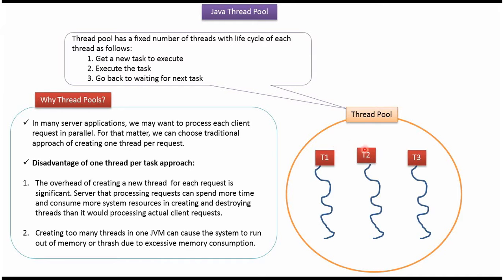ThreadPool has fixed number of threads. Each thread will get a new task to execute and it will execute the task. Once task execution is over, the thread will be returned to the thread pool and it will wait for next task to execute. This is the lifecycle of each thread in the ThreadPool.